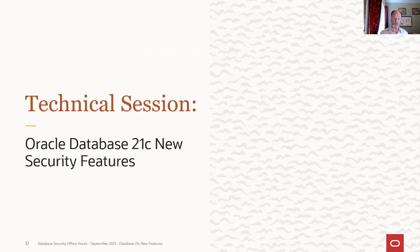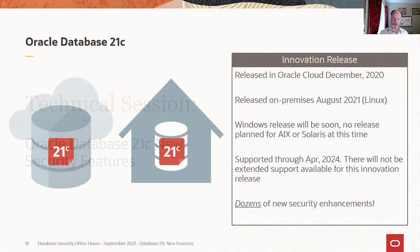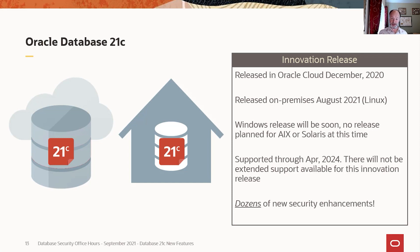Let's get into today's technical topic: new security features in Oracle Database 21c. Now, 21c is an innovation release. That means this is not the release most of you are going to go to — it's not really something you want to be using in production unless there happens to be a new feature in 21c that you need. We released 21c in the cloud in December of last year, and we just released 21c on premises last month. Today you can run it on premises as long as you're running on Linux. We will be releasing 21c on Windows fairly soon. We currently have no plans to release 21c on AIX or Solaris. Because it's an innovation release, the lifetime for 21c is fairly short — it goes through April of 2024, and we have no intention of offering extended support for 21c.